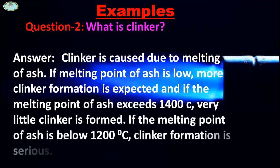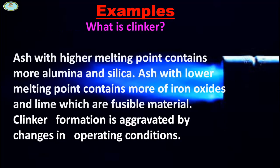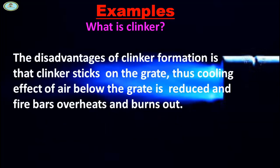If the melting point of ash is below 1200 degrees Celsius, clinker formation is serious. Ash with higher melting point contains more alumina and silica. Ash with lower melting point contains more iron oxides and lime, which are fusible materials. Clinker formation is aggravated by changes in operating conditions.